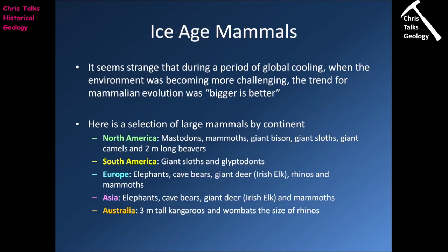Now let's think about ice age mammals. It seems strange that during a period of global cooling, when the environment was becoming more challenging, the trend of mammalian evolution was 'bigger is better.' Across continents: in North America we had mastodons, mammoths, great bison, giant sloths, giant camels, and two-meter-long beavers; in South America, giant sloths and gryphodonts; in Europe, elephants, cave bears, giant deer, rhinos, and mammoths; in Asia, elephants, cave bears, giant deer, and mammoths; and in Australia, three-meter-tall kangaroos and wombats the size of rhinos.